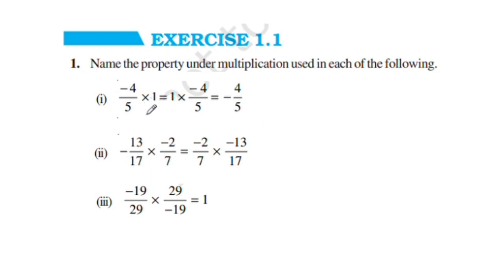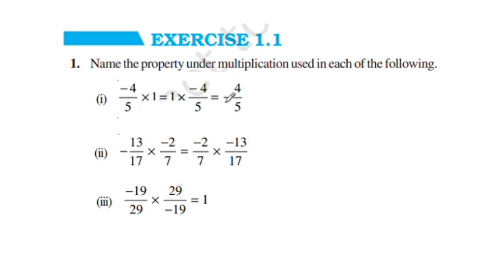Now, we will multiply negative 4 by 5 into 1, which is equal to 1 into negative 4 by 5, which is equal to negative 4 by 5. We will multiply 1 into 1 and multiply the same rational number.